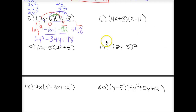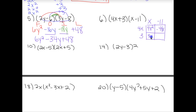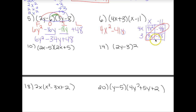For number 6, I'll review the box method — you should get the exact same answer as with FOIL. Make sure you have a row for each term in the first polynomial: 4x and 3. And a column for each term in the second: x and negative 11 (take the sign with it). Then do row times column: 4x times x is 4x squared, 4x times negative 11 is negative 44x, 3 times x is 3x, 3 times negative 11 is negative 33. Combining like terms: 4x squared minus 41x minus 33.